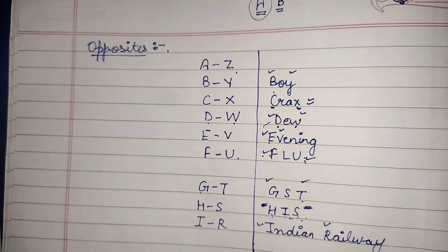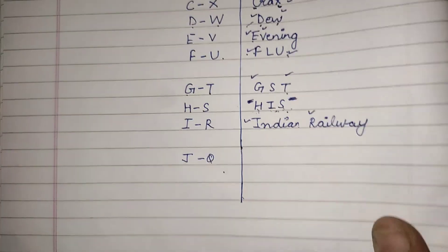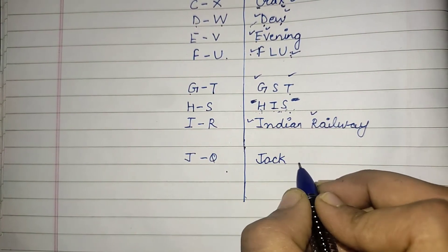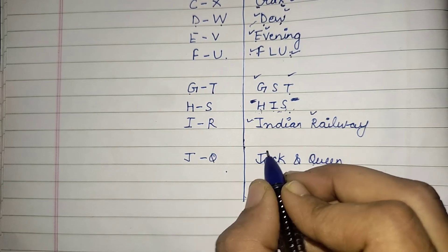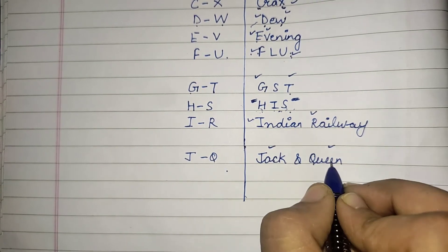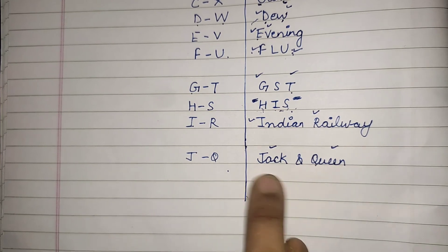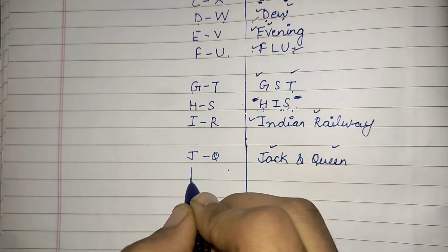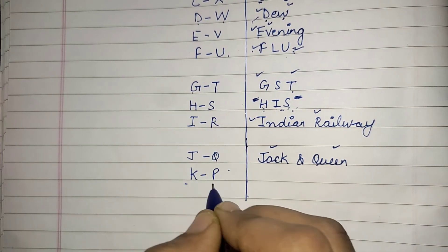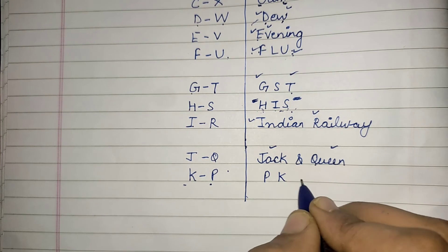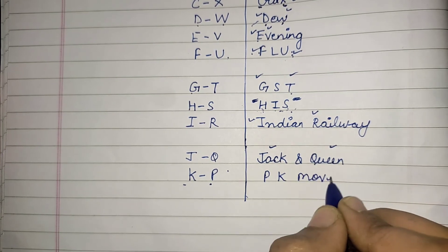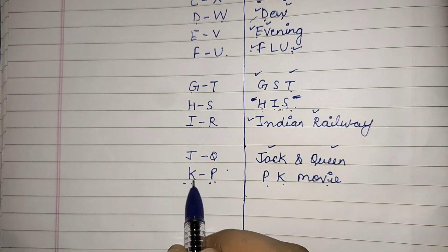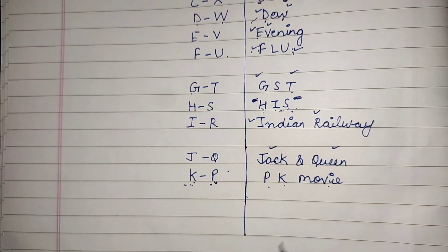J and Q — you know that in a deck of 52 playing cards there are Jack and Queen cards. So you can remember with this trick that Jack and Queen — J and Q — are opposite to each other. Next is K and P — with the popular Bollywood movie PK, you can remember that K and P are opposite to each other.